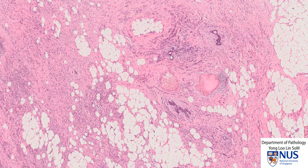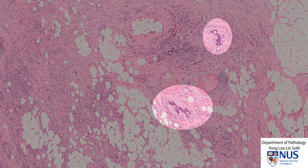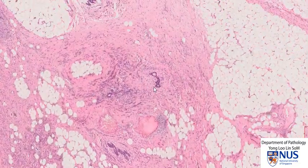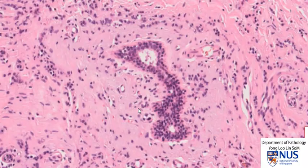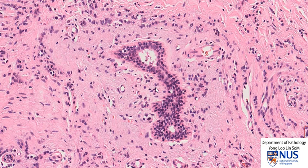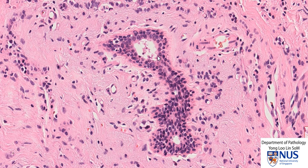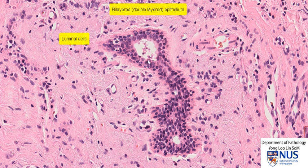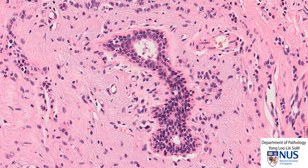At the same time, we can also appreciate some ductal and lobular structures at this magnification, and I'm going to zoom in onto one of the benign ductal structures where we can see quite clearly that the epithelium is bilayered, so there are two layers of cells — the luminal layer here and the outer basal layer. The presence of two layers of cells lining ducts and lobular structures is good evidence that we're looking at benign breast parenchymal elements.